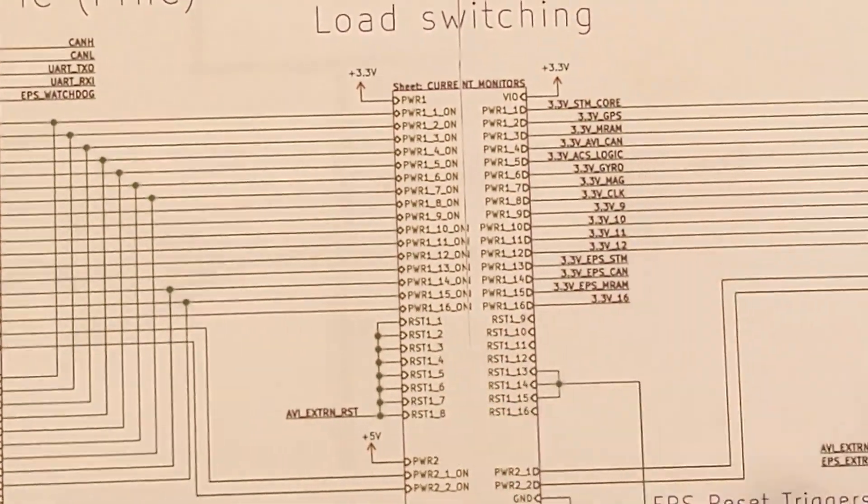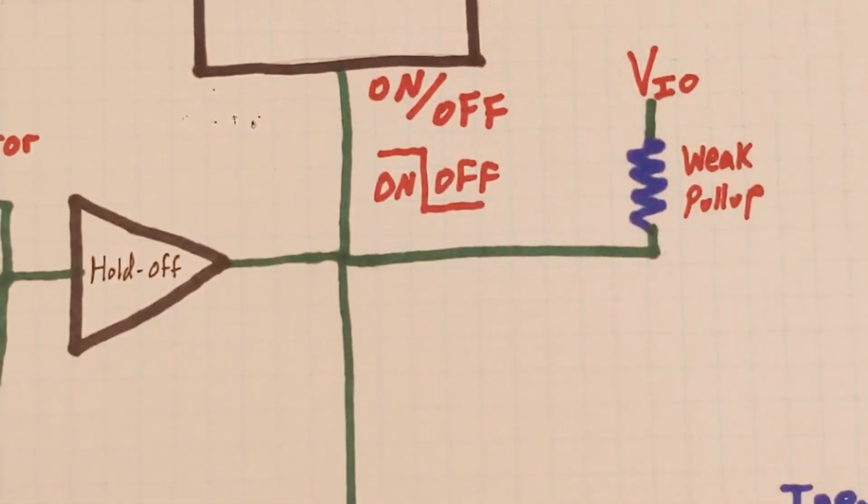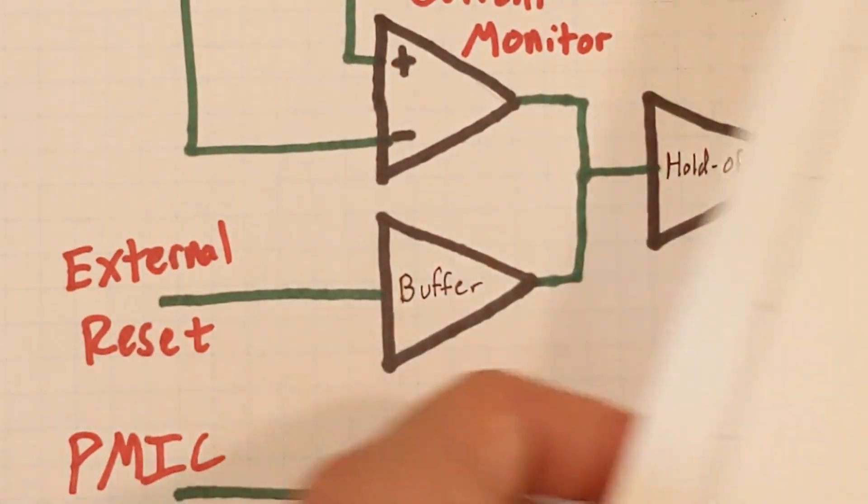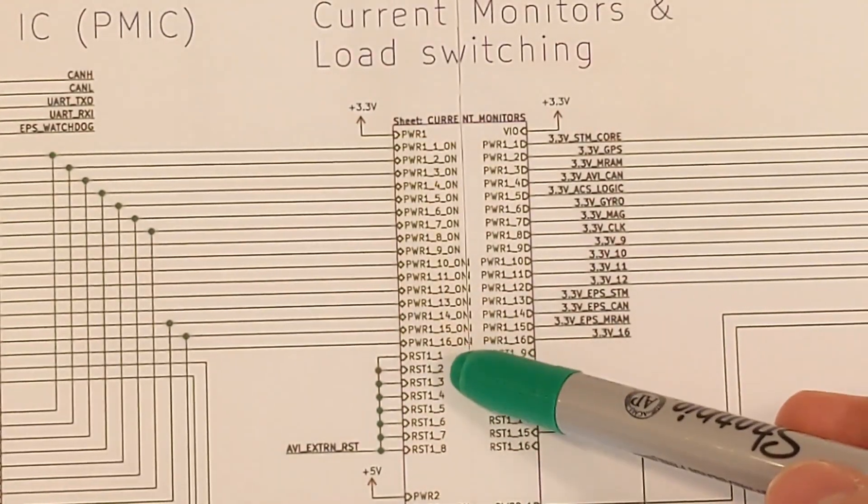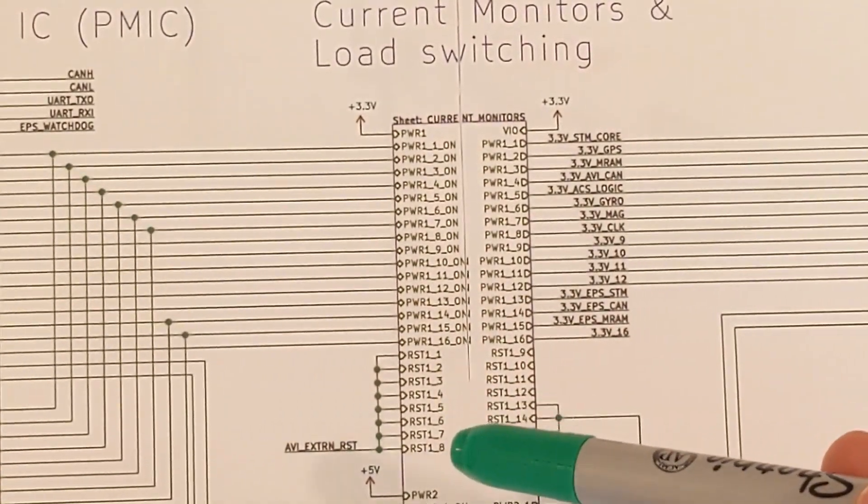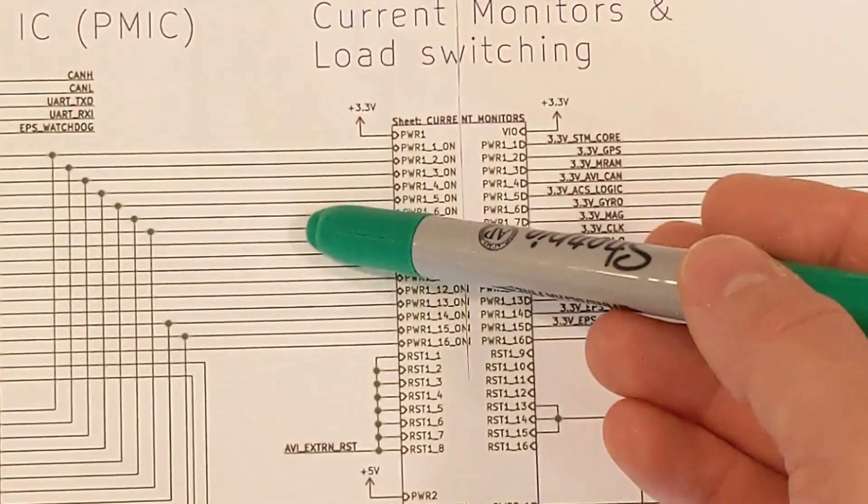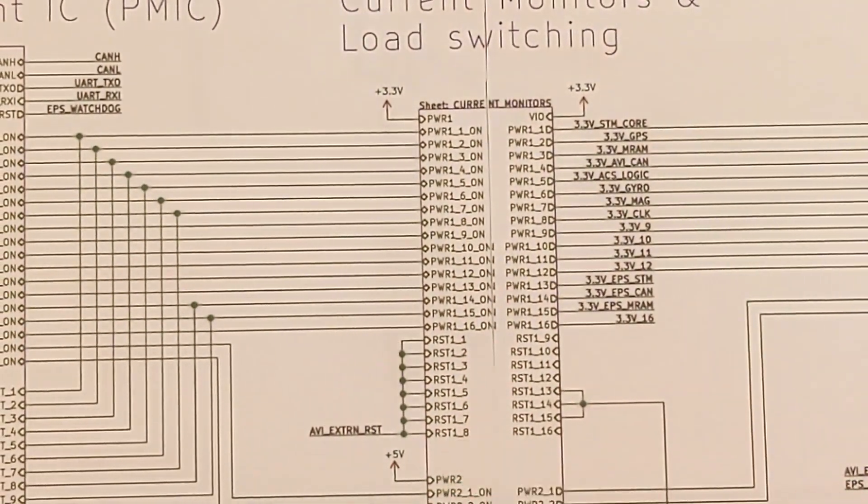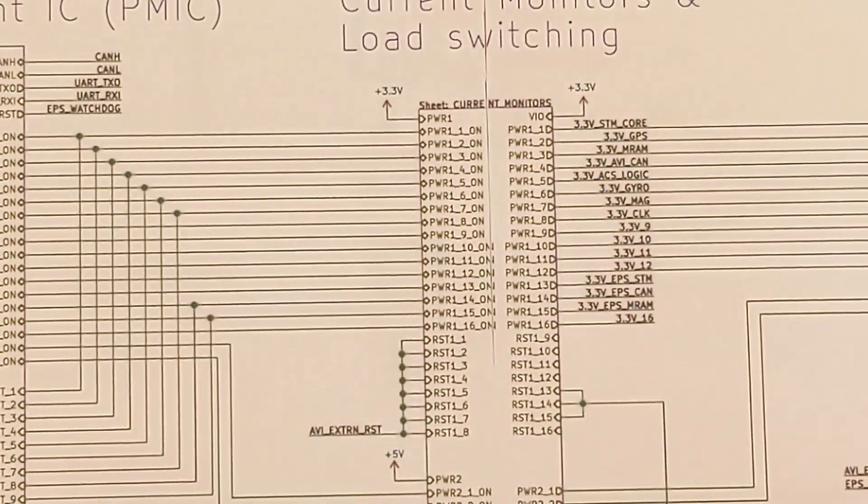Because of how these reset signals are set up, where each one of them go through this buffer, an external reset signal will reset all these 8 power rails. However, an individual power rail could be commanded off by the PMIC without causing the rest of the power rails to also be off. It's not an all or nothing situation.